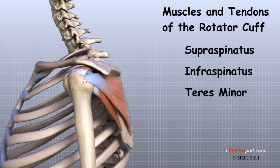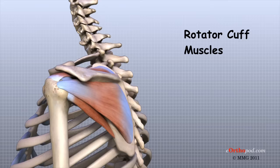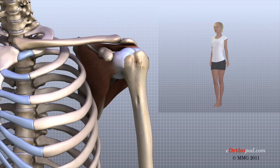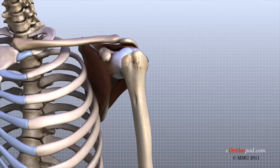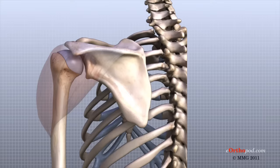Four tendons connect the deepest layer of muscles, the rotator cuff muscles, to the humerus. Just before these muscles attach to the upper end of the humerus, they join together to form a single tendon called the rotator cuff. The rotator cuff muscles lie just outside the shoulder joint. These muscles help raise the arm from the side and rotate the shoulder in many directions. The rotator cuff muscles and tendons also help keep the shoulder joint stable by contracting and holding the humeral head tightly in the glenoid socket as the humerus moves.